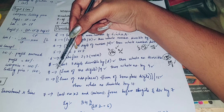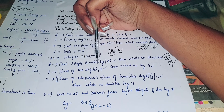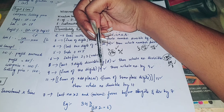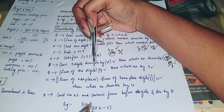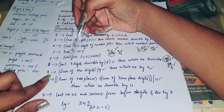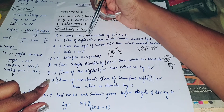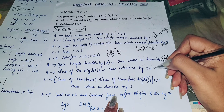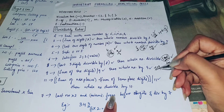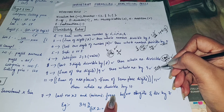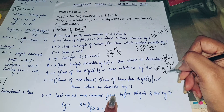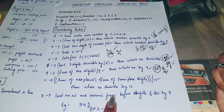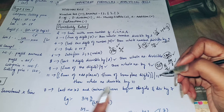Divisibility rule of 9: if the sum of the digits is divisible by 9, then the whole number is divisible by 9. Note that for 3, sum of digits divisible by 3; for 9, sum of digits divisible by 9. Example: 729 — 7 plus 2 is 9, plus 9 is 18. 18 is divisible by 9, so 729 is divisible by 9.